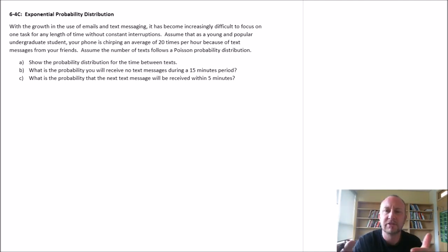That follows a Poisson distribution, right? I'm receiving 20 text messages per month—well, for me 20 per month, for you 20 per hour. So it's discrete. The number of text messages is a discrete variable.